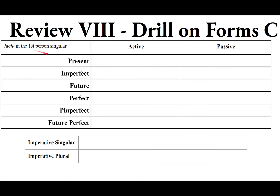If your verb is given in the first-person singular, the first principal part IACIO is your first answer — that is the first-person singular present active indicative. To make the passive, just add the R: IACIOR. So: I throw / I am thrown; I am throwing / I am being thrown.